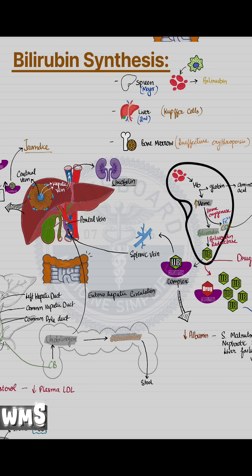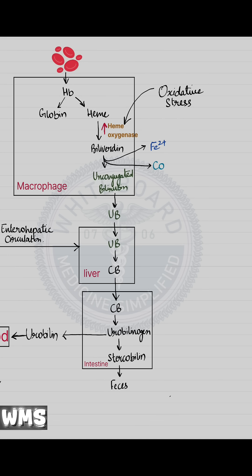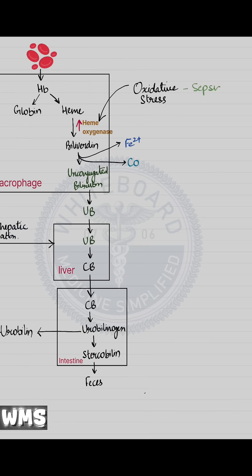Bilirubin synthesis and metabolism — let's look at the applied aspects of this pathway. Heme oxygenase converts heme into biliverdin, and it's upregulated during oxidative stress like in sepsis, trauma, or hypoxia.